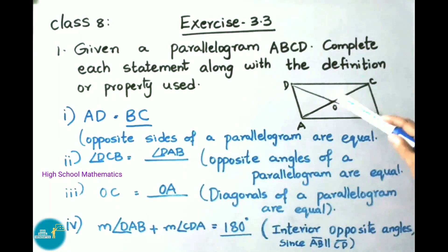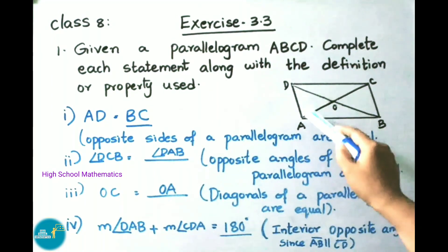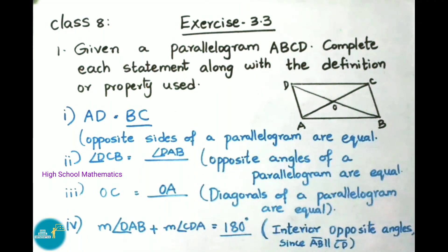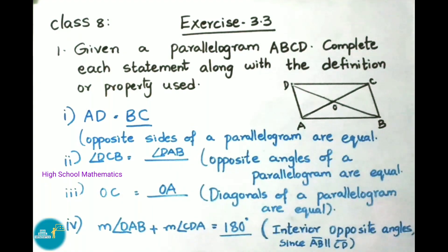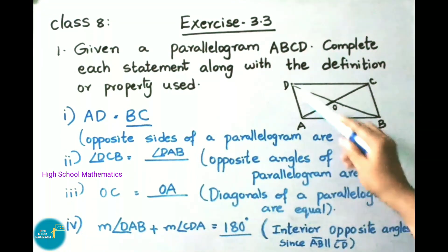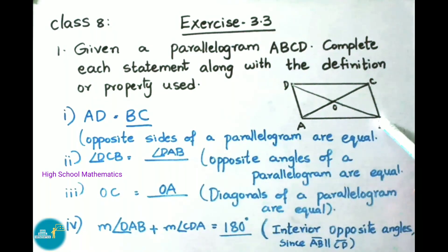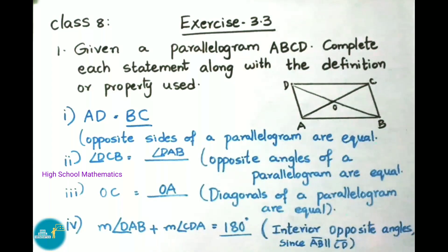Next, OC is equal to OA. Why? Because diagonals of a parallelogram bisect each other. Fourth, angle DAB plus angle CDA equals 180 degrees. Why? Because interior co-interior angles are supplementary — since AB is parallel to CD, angle DAB plus angle CDA equals 180 degrees.